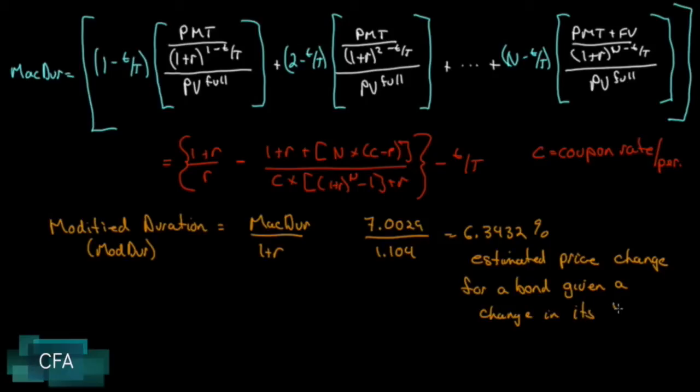So it's the estimated price change for a bond given a change in its own yield to maturity. So what it's saying is, remember the price of our bond was 85.305075.